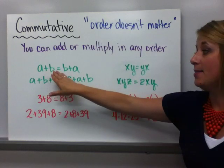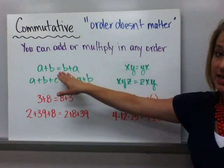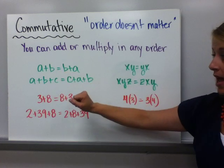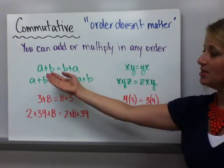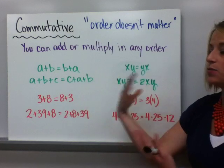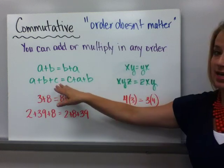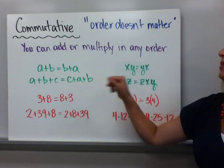In algebra, what does that look like? A plus B is the same thing, it's equal to B plus A. I could have more than two terms in it. It's not just like a mirror image. I can switch up the order. A plus B plus C is equal to C plus A plus B.